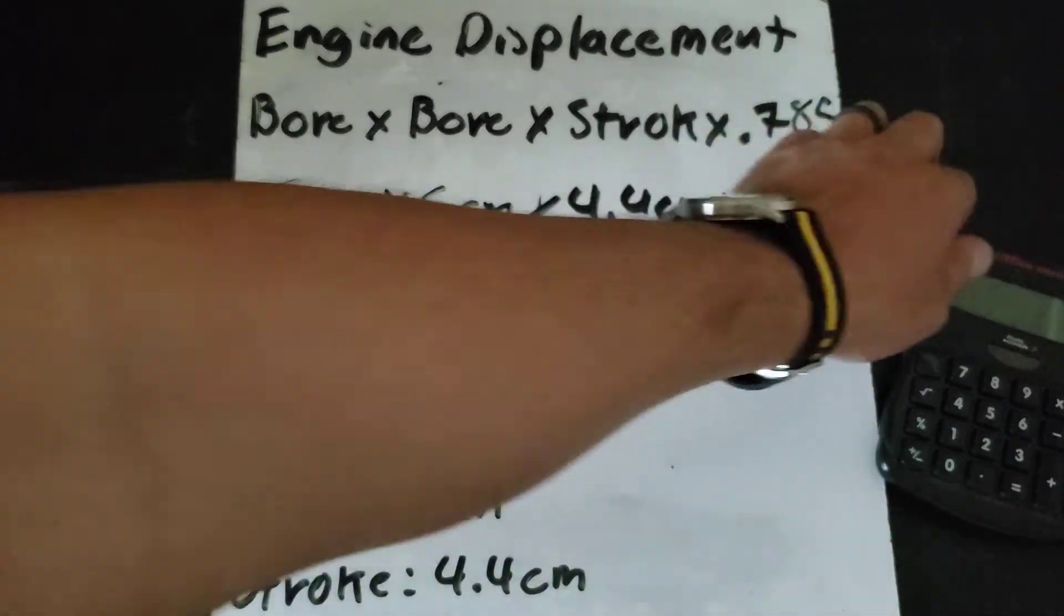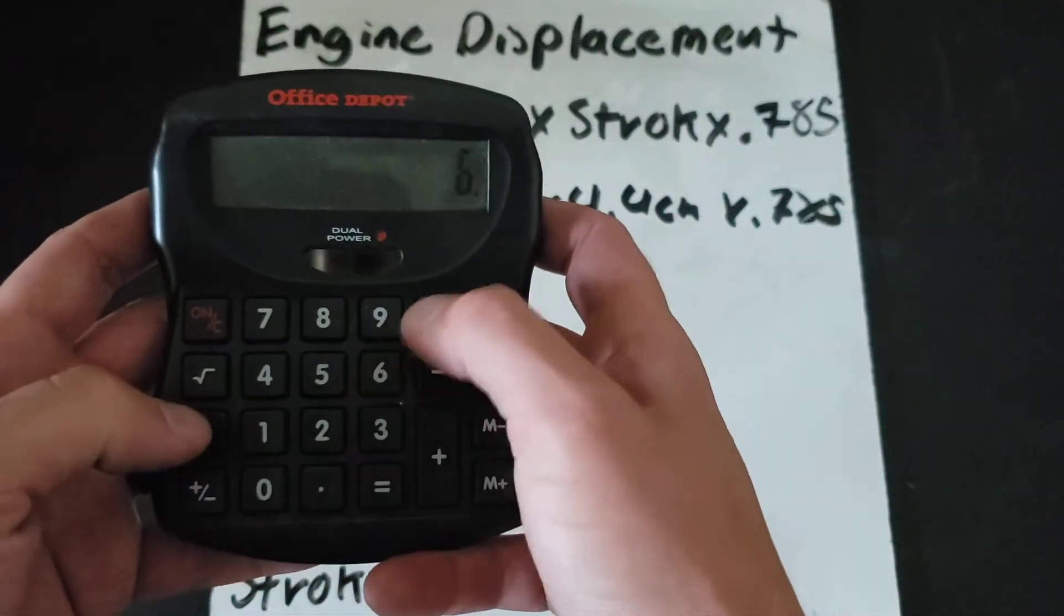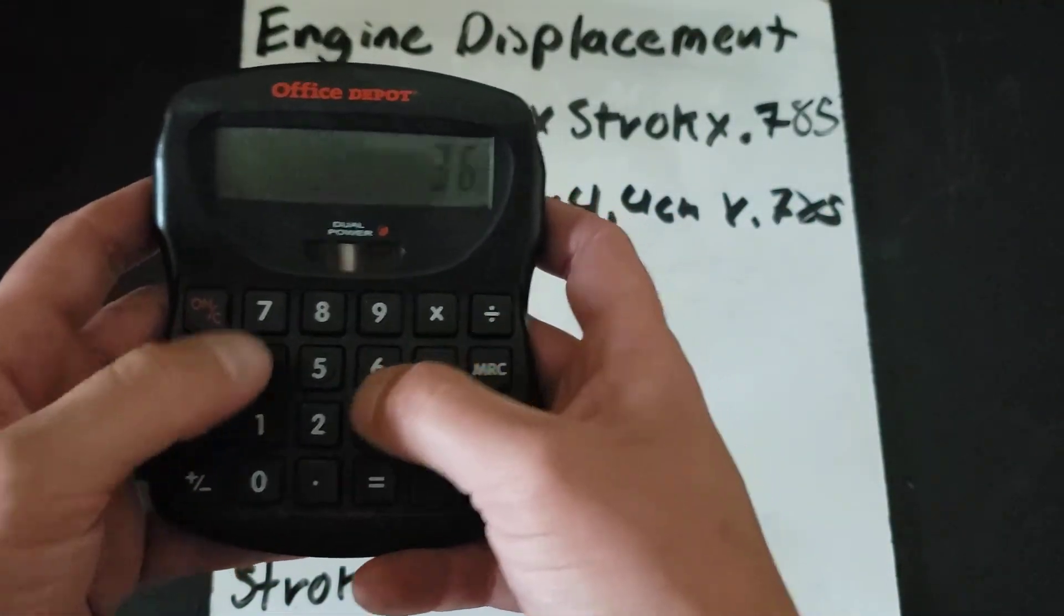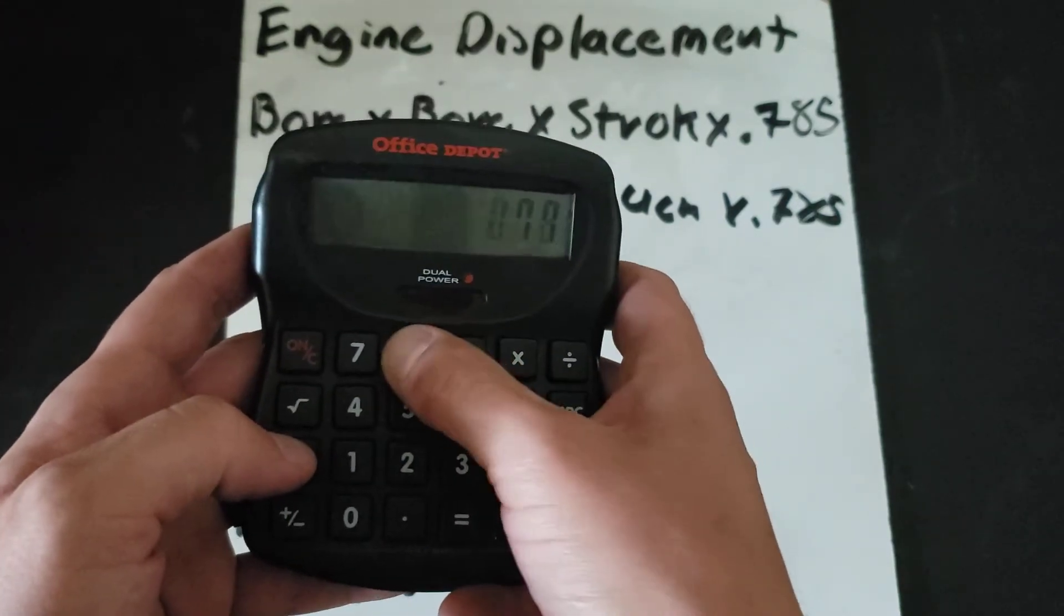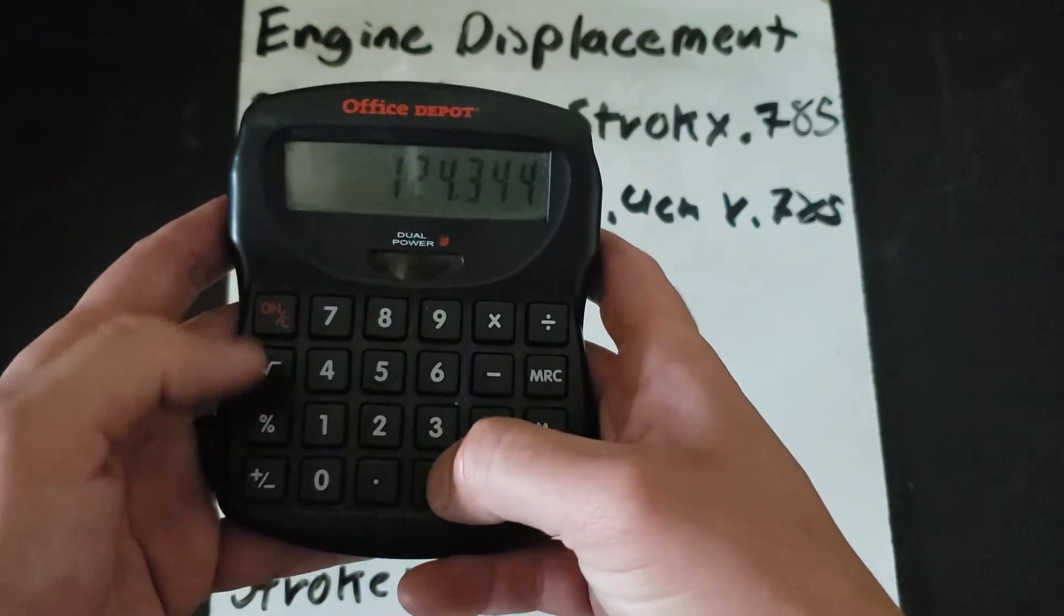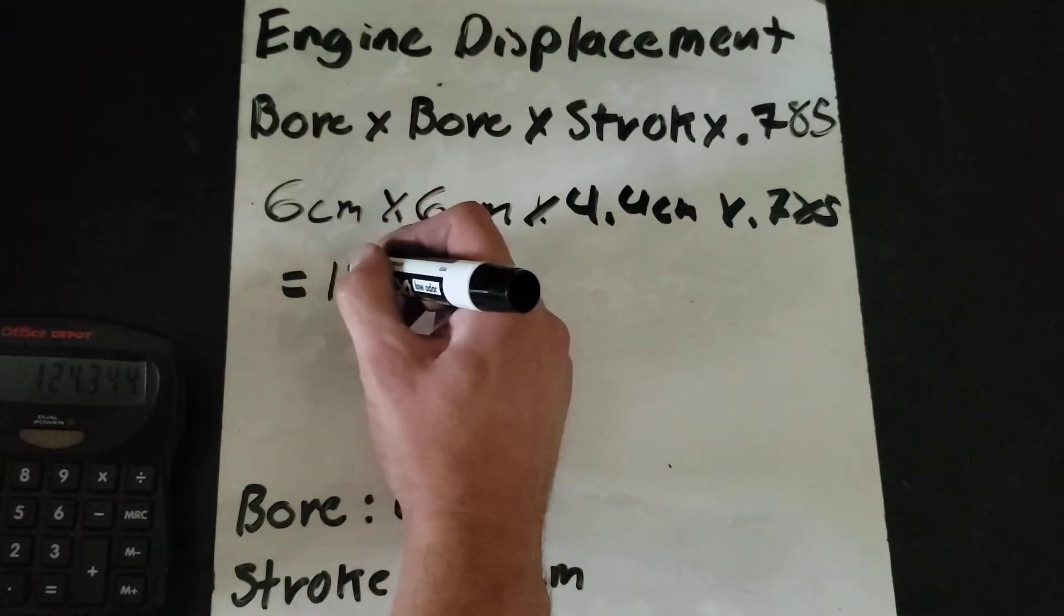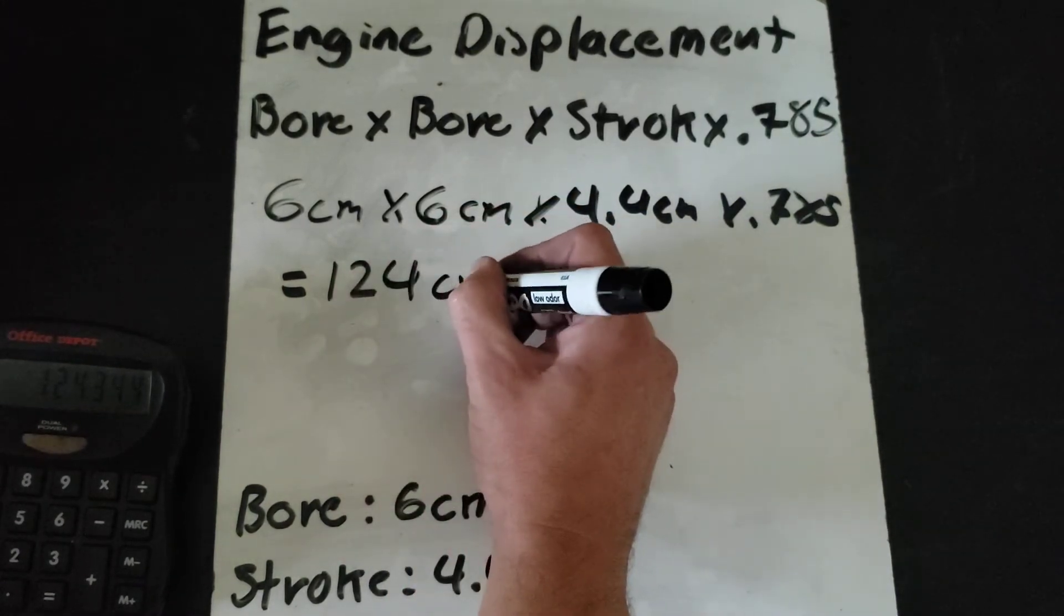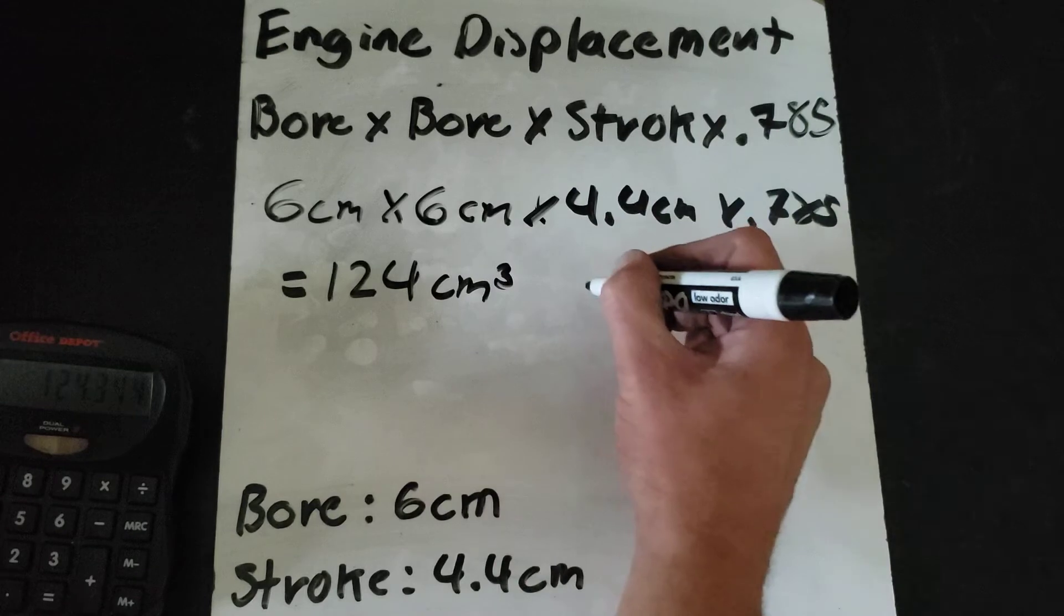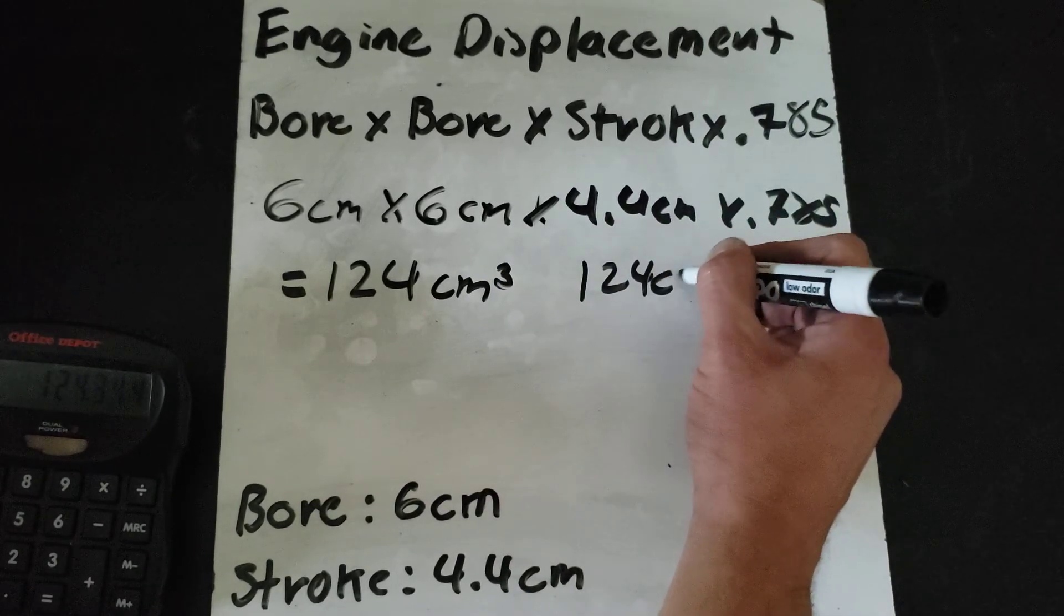This is going to equal, take my trusty calculator here, 6 times 6 times 4.4 times 0.785 equals 124. So I'm going to say that as 124 centimeters cubed or 124 ccm.